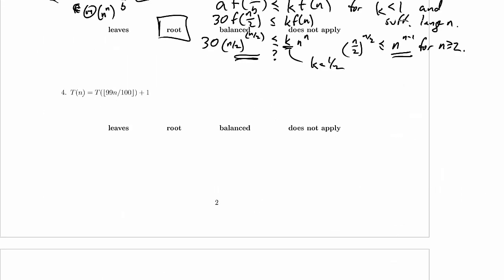So in problem 4 we're dealing with T(n) equal to T(99n/100) plus 1. So is this of the form aT(n/b), ignoring floors and ceilings, plus f(n)? Well the f(n) part, that's easy, we've got 1 here.